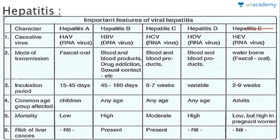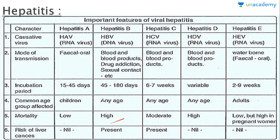Common age group affected: children for hepatitis A, any age for B, C, and D, and adults mostly for hepatitis E. Mortality is very low for hepatitis A, very high for hepatitis B, moderate for hepatitis C, very high for hepatitis D, and low for hepatitis E but high in pregnant women. Risk of liver cancer is nil for hepatitis A, present for hepatitis B and C, and nil for hepatitis D and E.